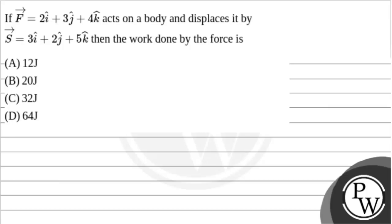Hello, let's read the question. The question says, if F vector is equal to 2i cap plus 3j cap plus 4k cap acts on a body and displaces it by S vector is equal to 3i cap plus 2j cap plus 5k cap